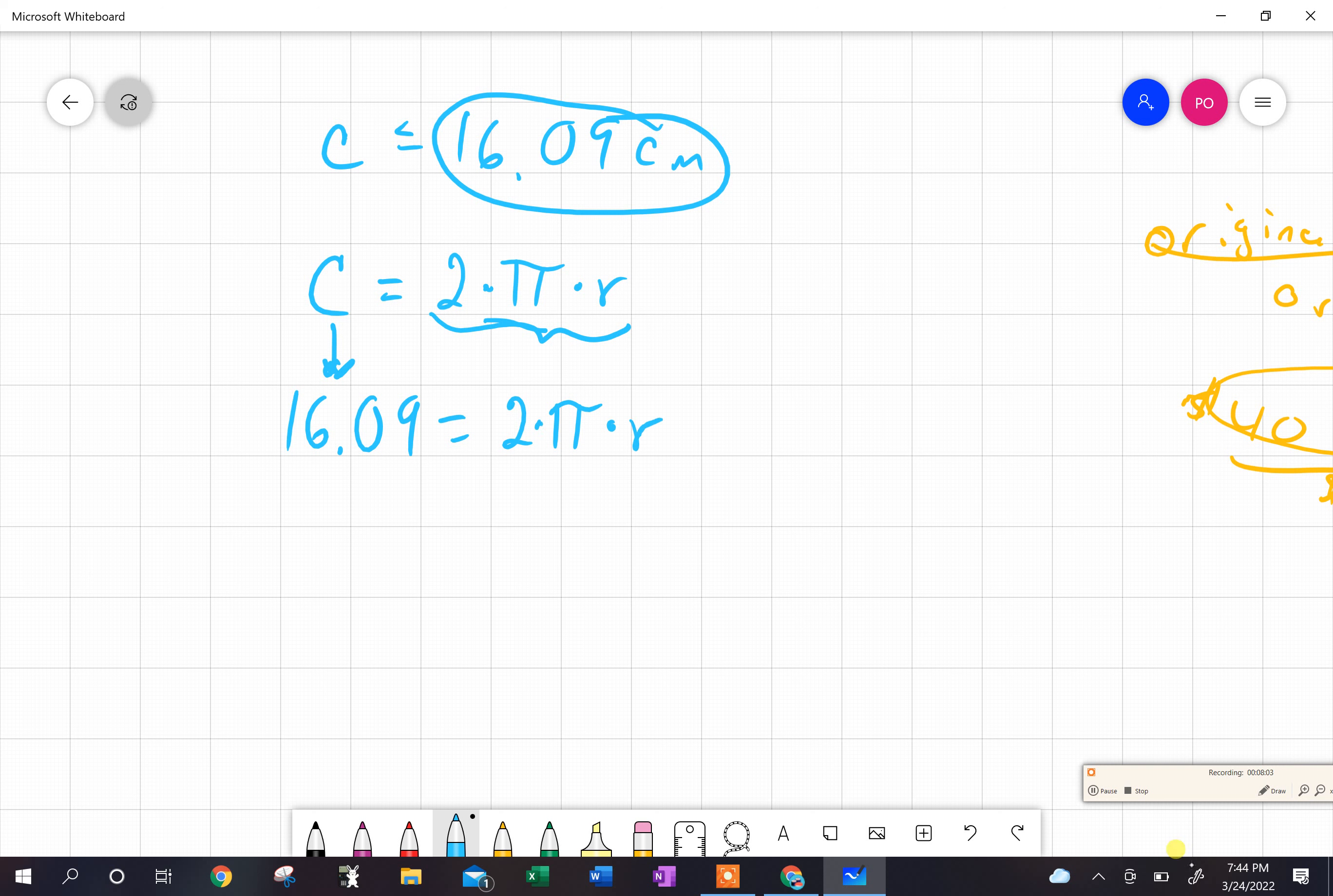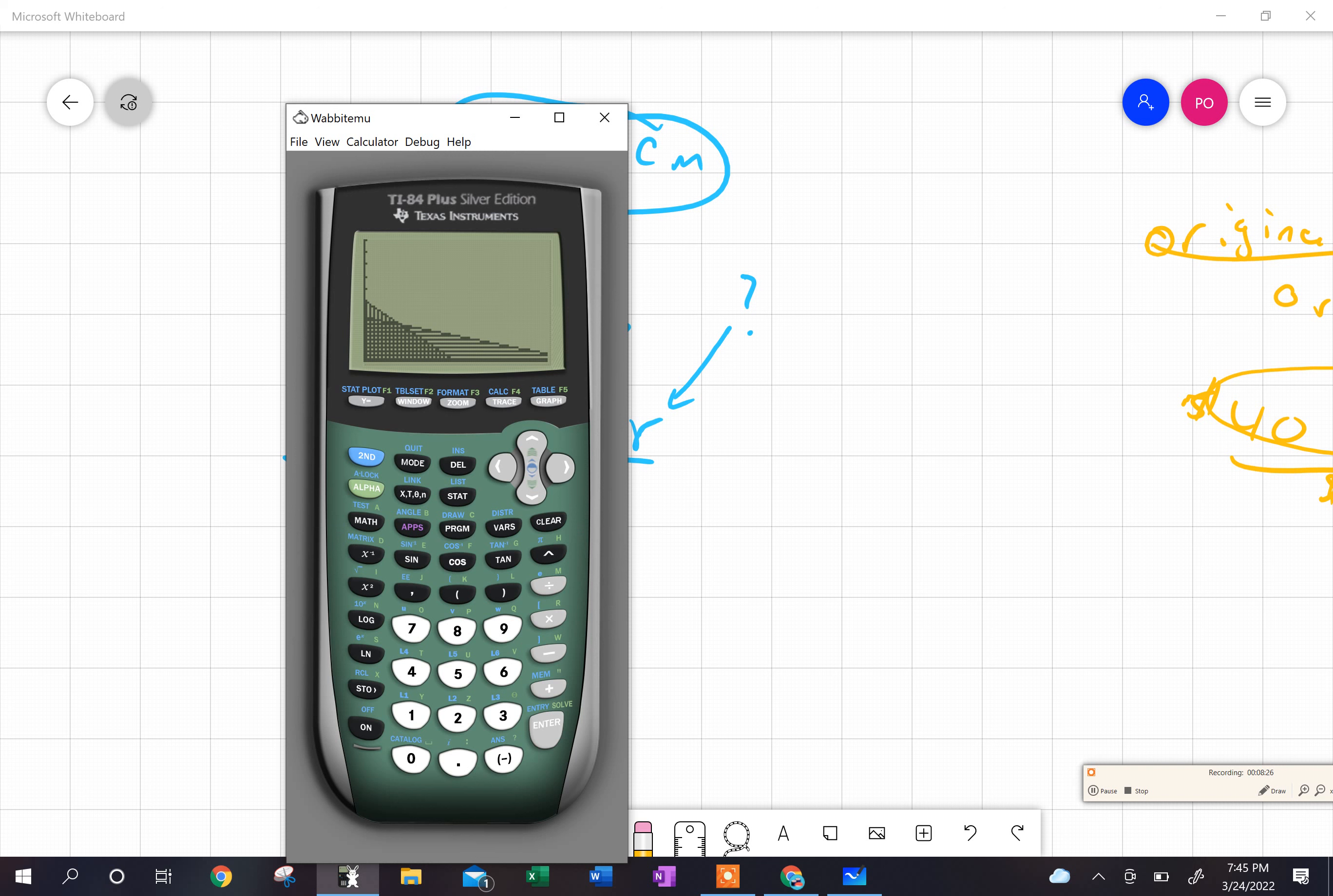But what does C equal? It equals this, so I can write down 2πr. Well I'm trying to find out what is my radius, that's what I want to know. So I need to get rid of this 2π because they're connected through multiplication. To undo multiplication you divide. I'm going to divide by 2π. When I do 2π divided by 2π is 1, and that leaves me with just my radius.